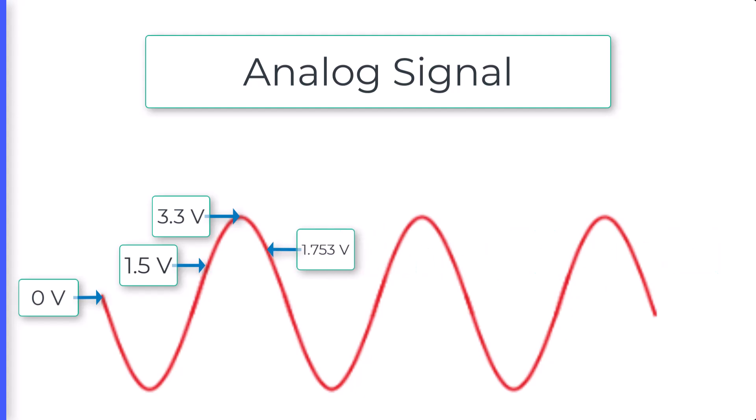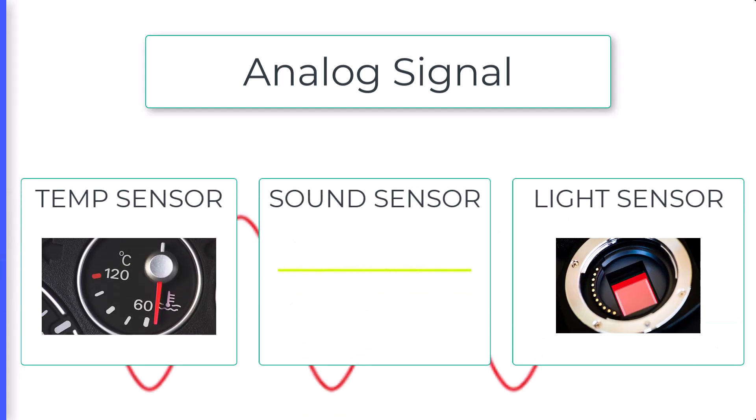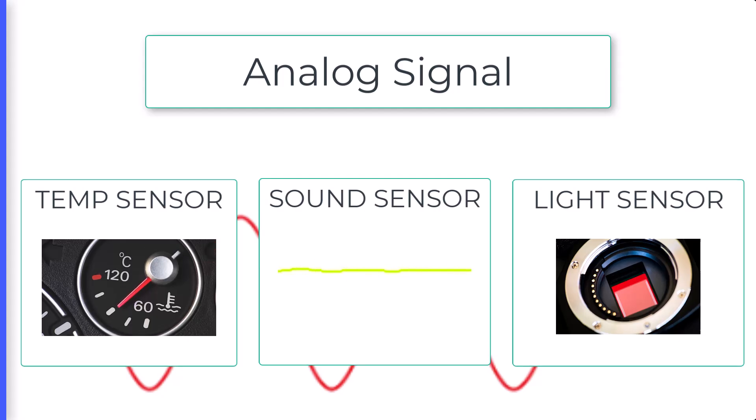Analog signals are often used in sensors or audio systems, where subtle variations are important. For example, the voltage might represent temperature, light intensity, or sound, and the signal varies smoothly over time.